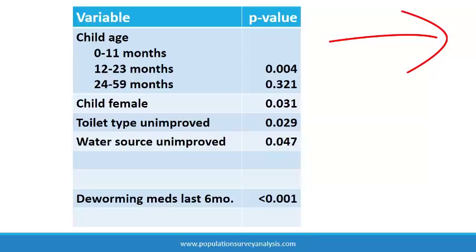The goal of backward stepwise regression is to identify key factors that are associated with the outcome. The stepwise process provides a systematic way to arrive at the simplest model with the most explanatory power.